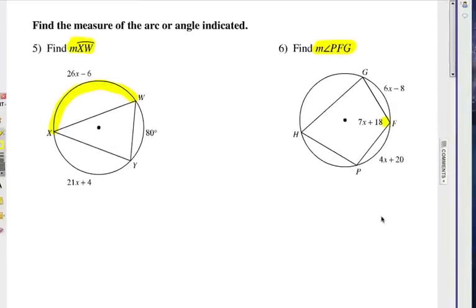Now we're going to have a self-quiz where the last two problems here are a little more challenging and I urge you to give them a try. In problem number five, it asks for the measure of arc xw. I have it highlighted here, xw is this arc and it is labeled as 26x minus 6. This arc here, wy, is already measured to be 80 degrees. And this arc here, xy, is measured to be 21x plus 4.